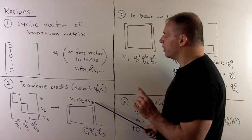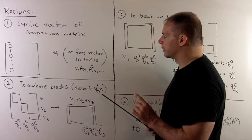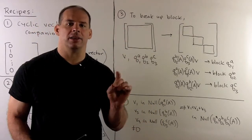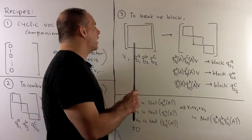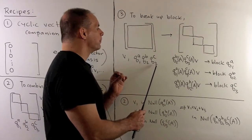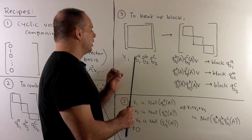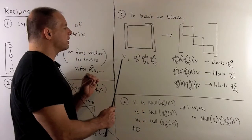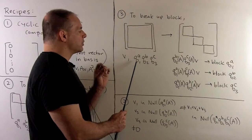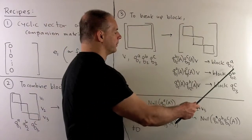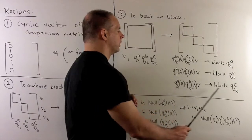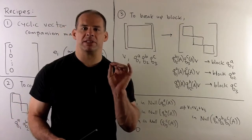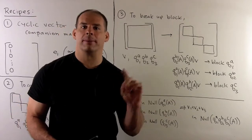That sum gives us a cyclic vector for a single combined block. To go in the other direction — given a block in the second formulation and wanting to break it into blocks for each irreducible factor — we take each of the irreducible factors applied to A to their powers, apply them to the cyclic vector, but omit the factor corresponding to the block we're interested in. It really comes down to a statement about irreducible polynomials and how we combine them.